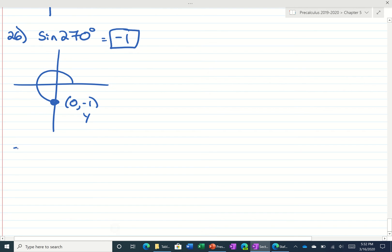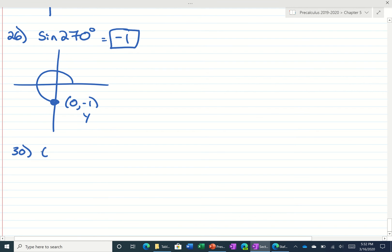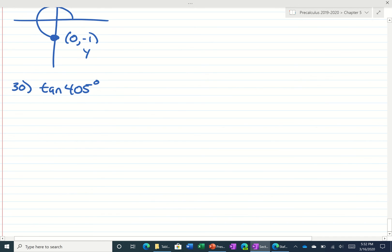Take a look at number 30. Number 30 says the tangent of 405. 405 puts us 45 degrees past 360. Tangent would be the opposite over the adjacent. 1 over 1 is 1.